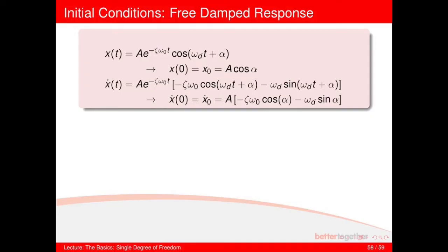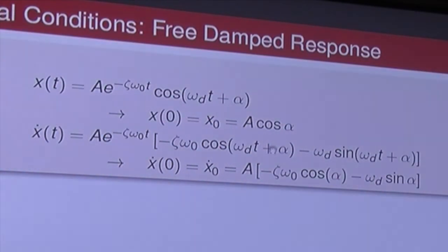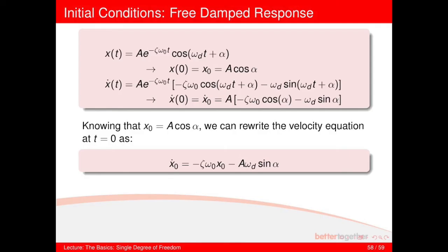Plugging zero in for t in the velocity equation, the exponential term drops to one. You retain A, and get minus zeta omega-zero times cosine alpha, plus minus omega-d sine alpha. Since A cosine alpha equals x-zero, you can substitute that in and you know what those two terms are.